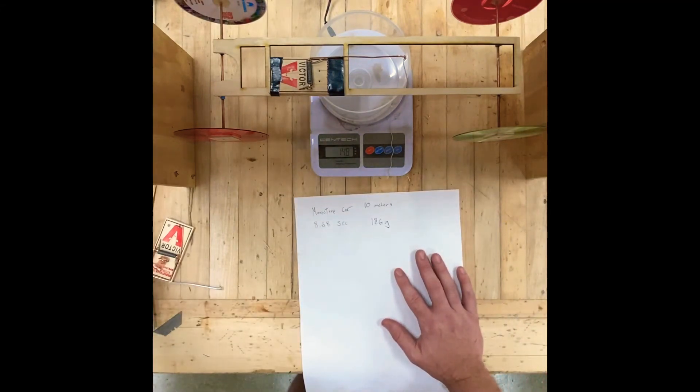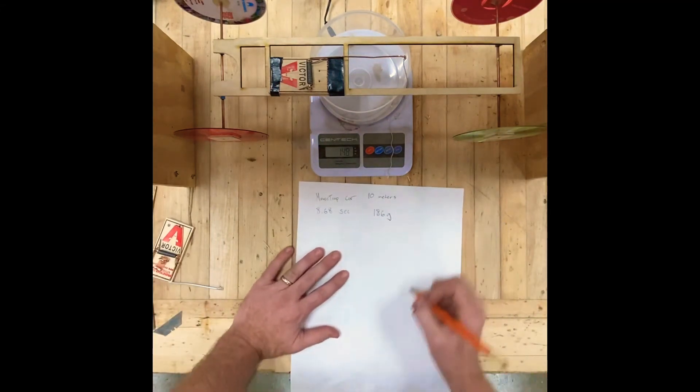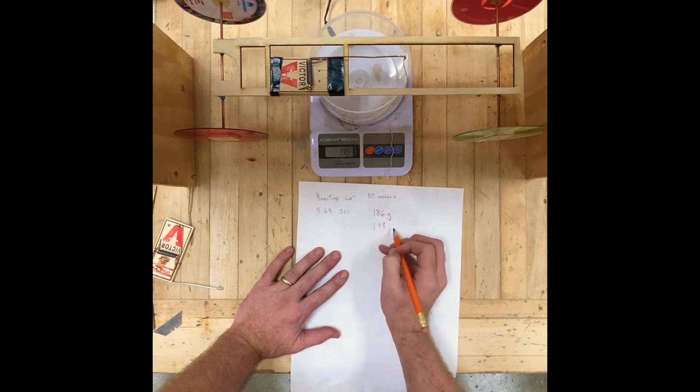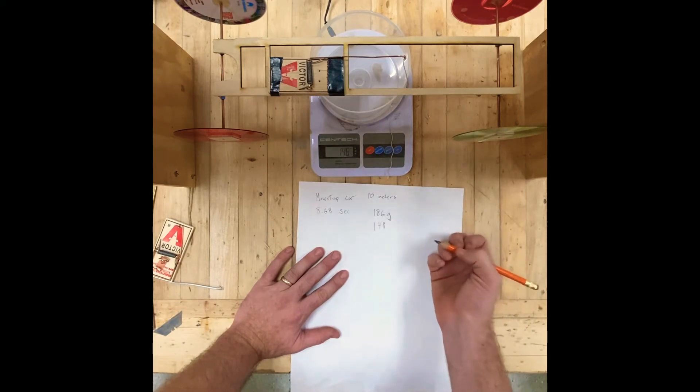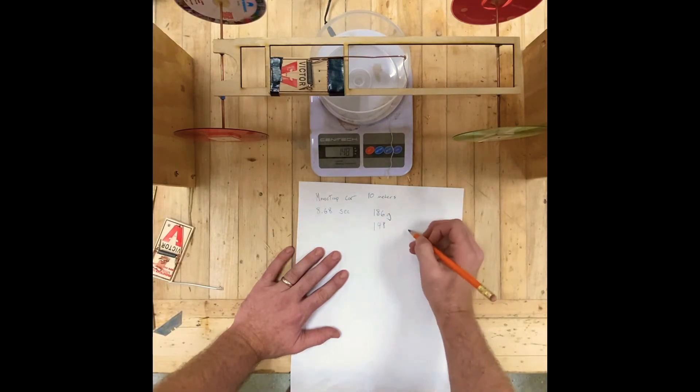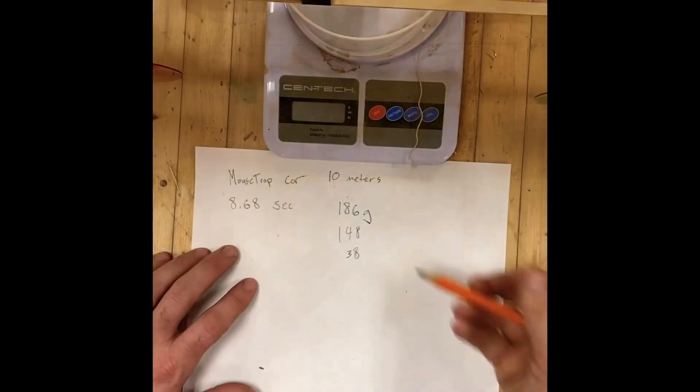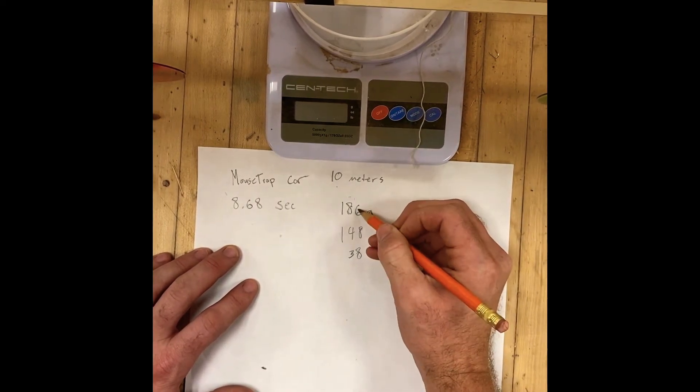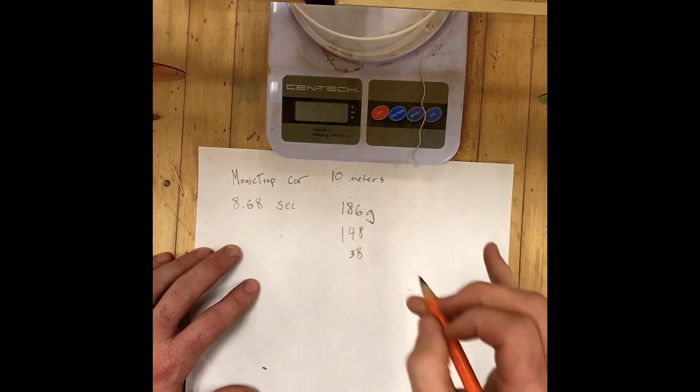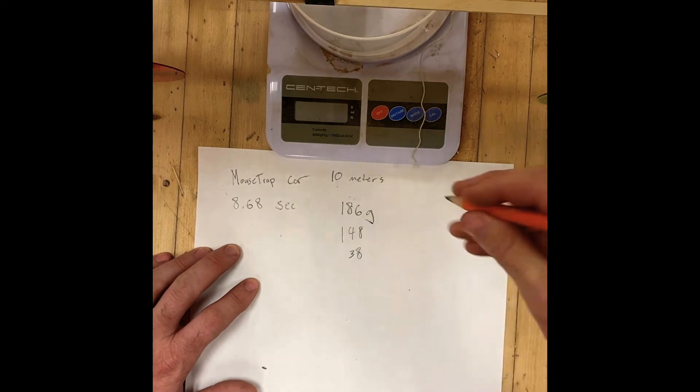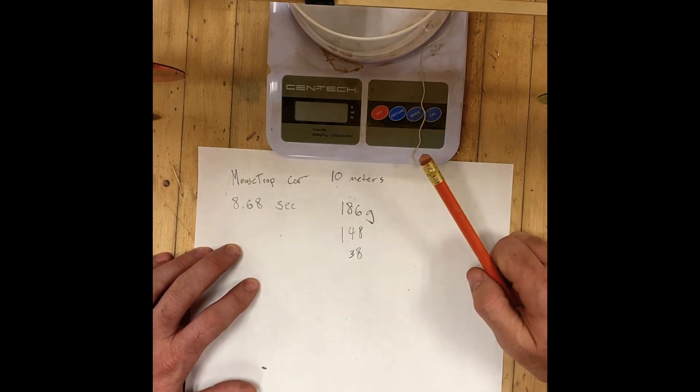148 grams is where we're at right now. So we had 186, now we're at 148. That's a total of 38 grams that we've reduced. So we had a total weight reduction of 38 grams. 38 divided by 186 is just about 0.205, which is 20% weight reduction by cutting this out. We're going to see how that correlates to our time.